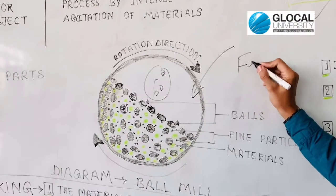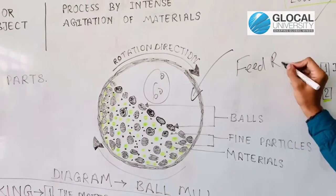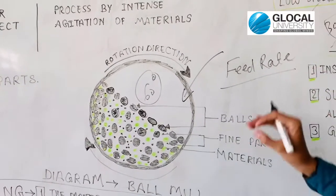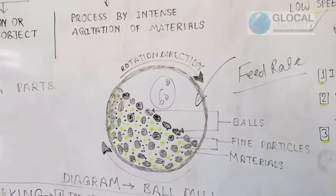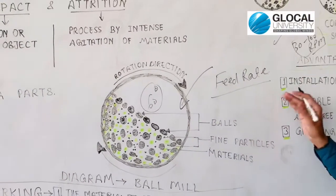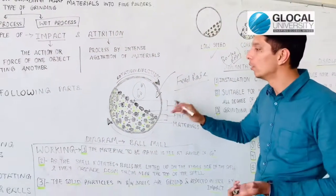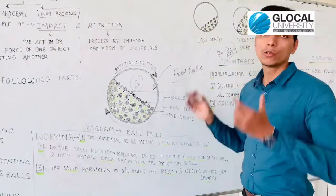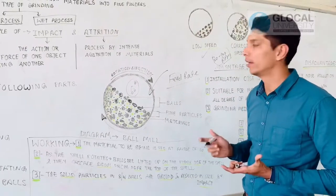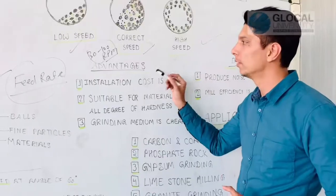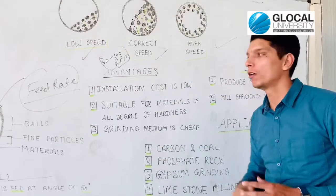Next is an important key point: the feed rate. This plays an important role in the size reduction process. If the feed rate is more, we will get a coarser powder. If the feed rate is low, we will get small particles.